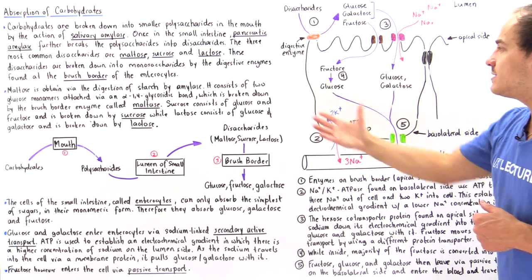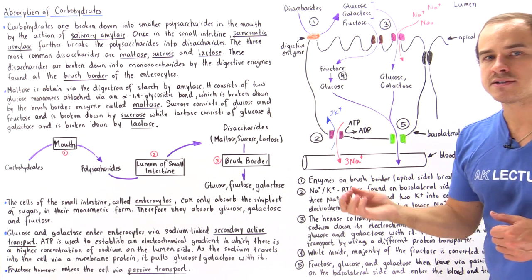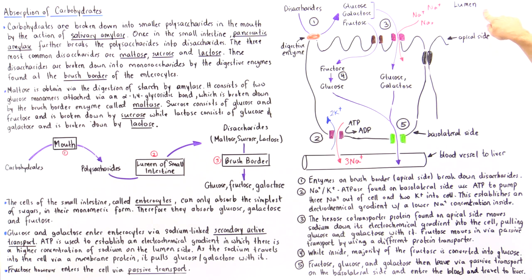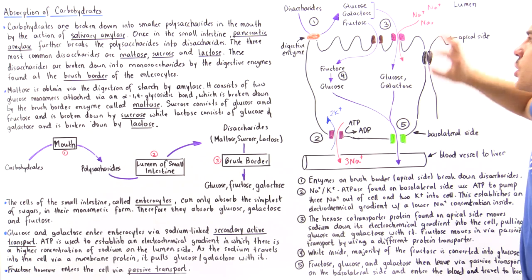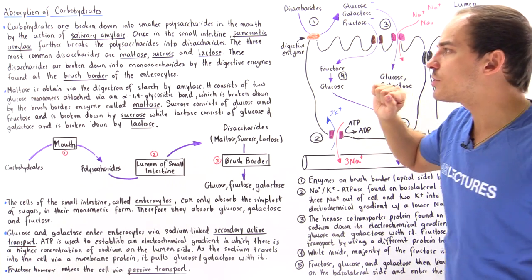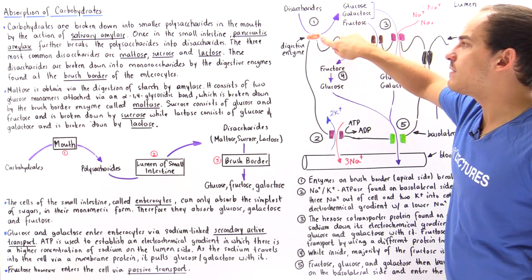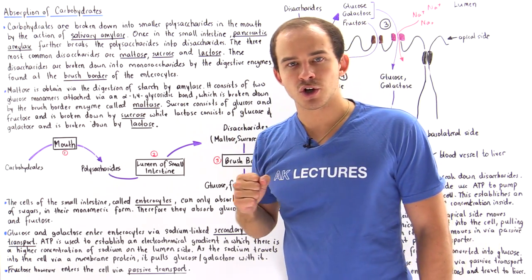This is a single cell found in the small intestine, known as an enterocyte. On the apical side of the cell — apical simply means it faces the lumen cavity of the small intestine — we have these hair-like projections known as microvilli. These microvilli together are known as the brush border, and they contain these digestive enzymes that can break down disaccharides into their individual sugars.